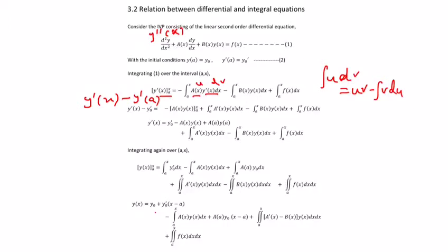Then substituting the upper and lower limits, you will get y dash(x) minus y dash(a). Since y dash(a) equals y naught dash, substitute that. For the first integral on the right side, you are applying integration by parts. The formula is written here: a(x) is u, and y dash(x) is dv.